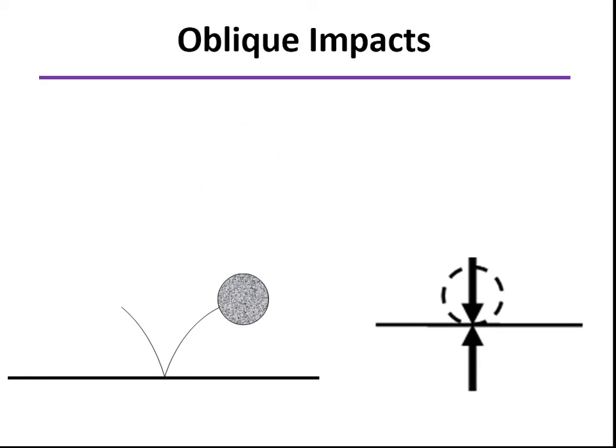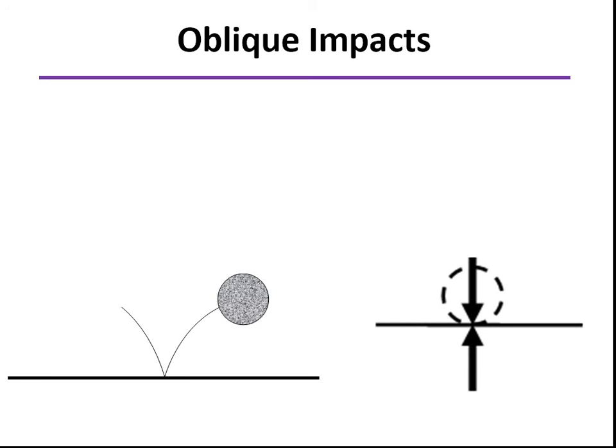So in this case, those forces would be normal to the floor, or in the y direction. The y velocity would be reduced by that coefficient of restitution, but in the x direction, that component of velocity would be unchanged.